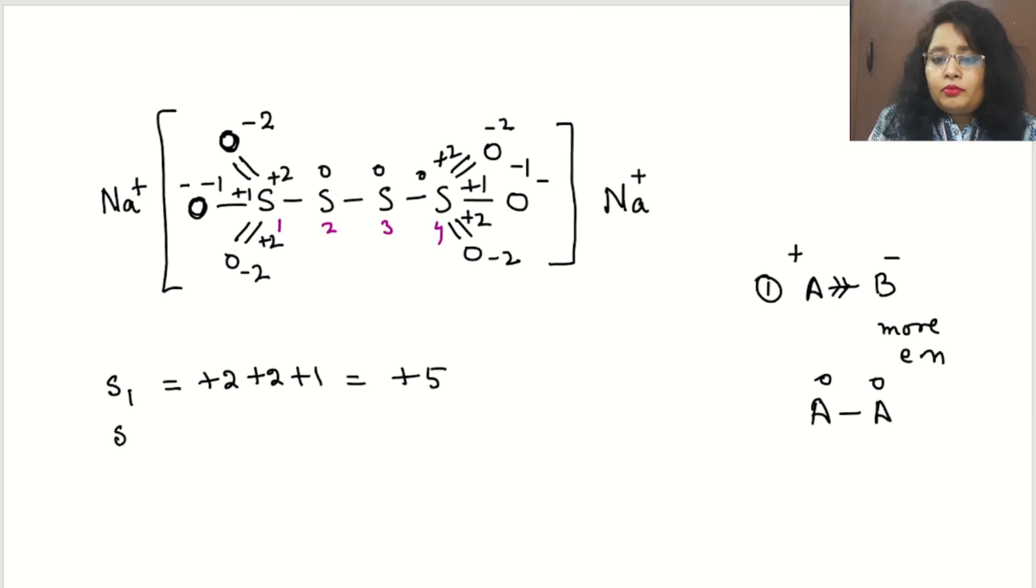Now come up to sulfur number 2, we can say 0. Sulfur number 3 oxidation is 0. And sulfur number 4 oxidation number is again +2 +2 +1 +0, that is +5. So this will be our answer.